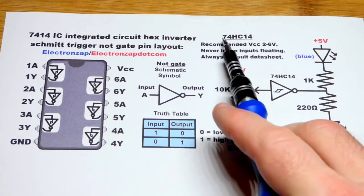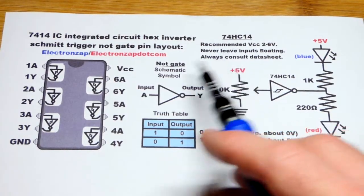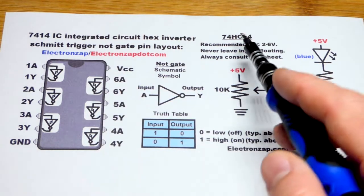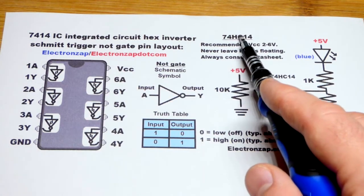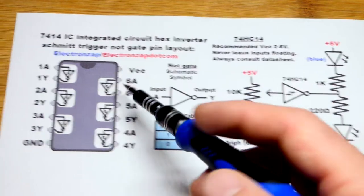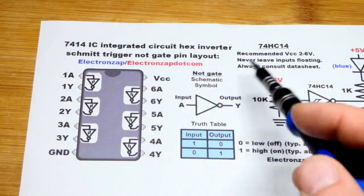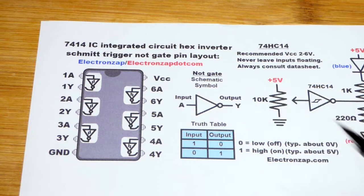In this video we're going to look at our first 7400 series integrated circuit for this video series. We're going to look at the 74HC14, where HC means high speed CMOS.